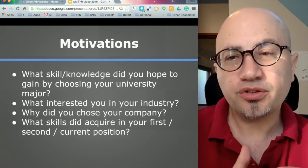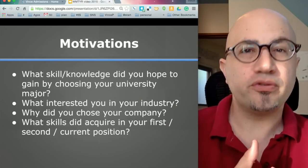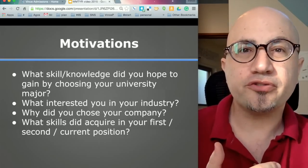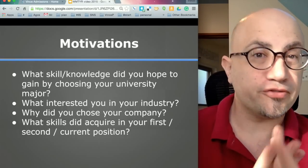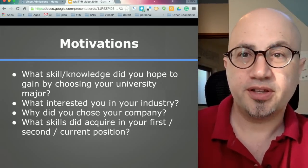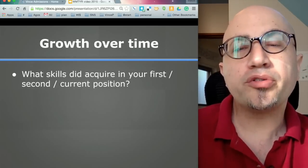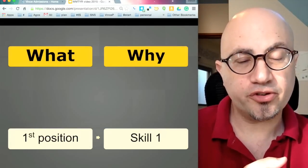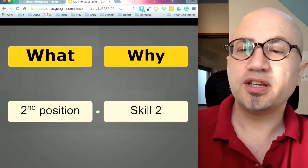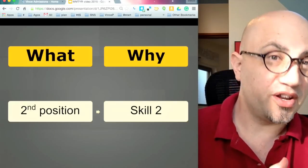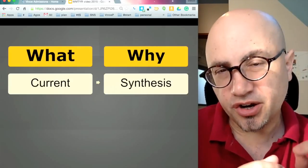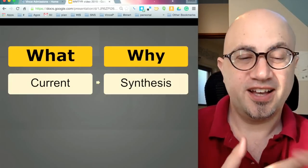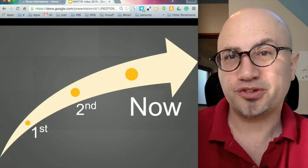What skill or knowledge did you hope by choosing your university or your major? Why did you choose your industry, your first company, your first job or your current job? You want to show growth over time: what I did and why I did it. My first position led to my first skill, my second position led to another skill, and perhaps my current position represents a synthesis or combination, a synergy of skills one and two.